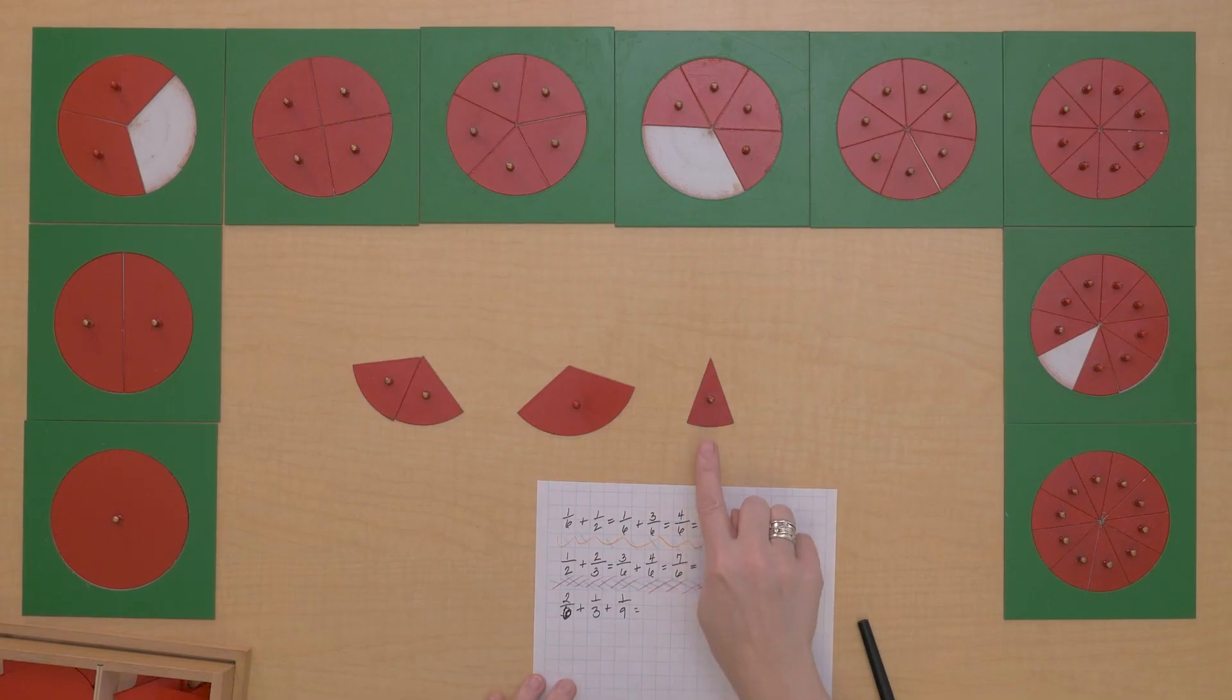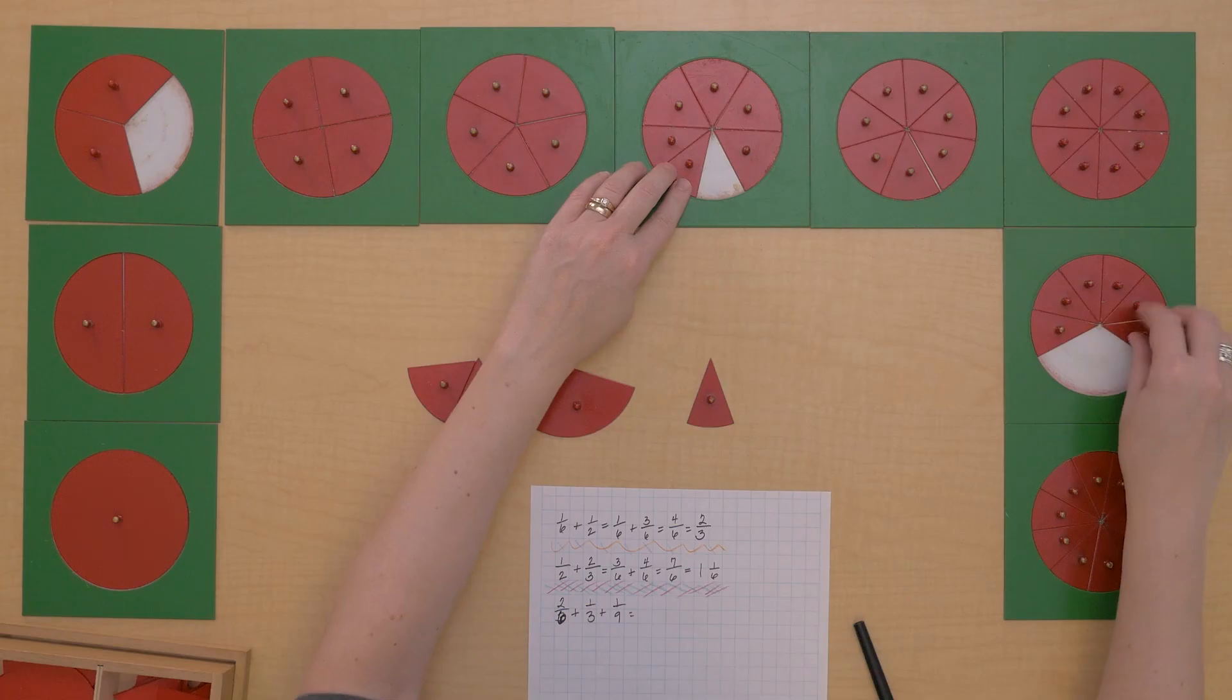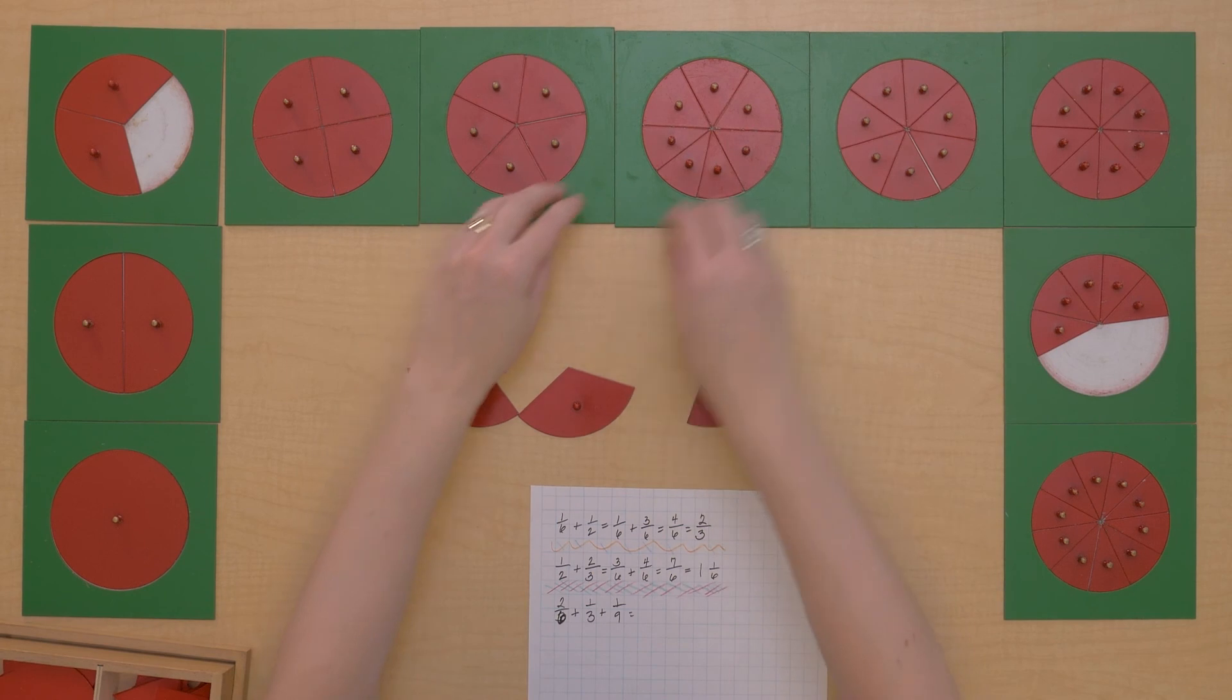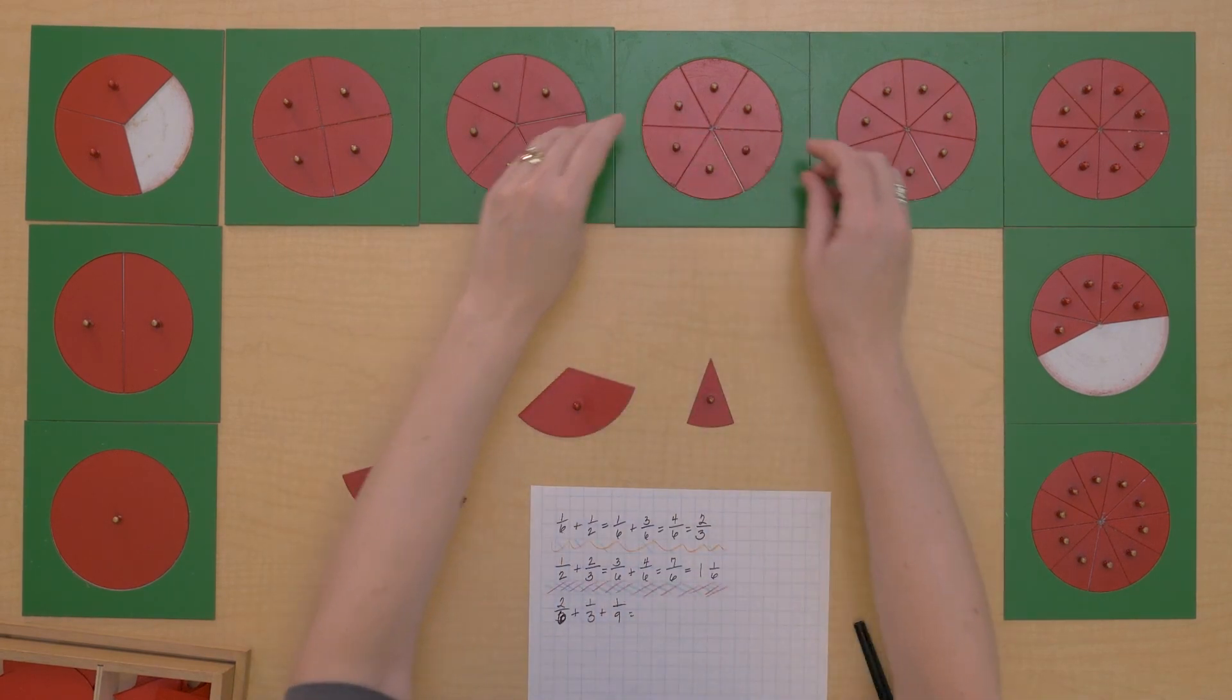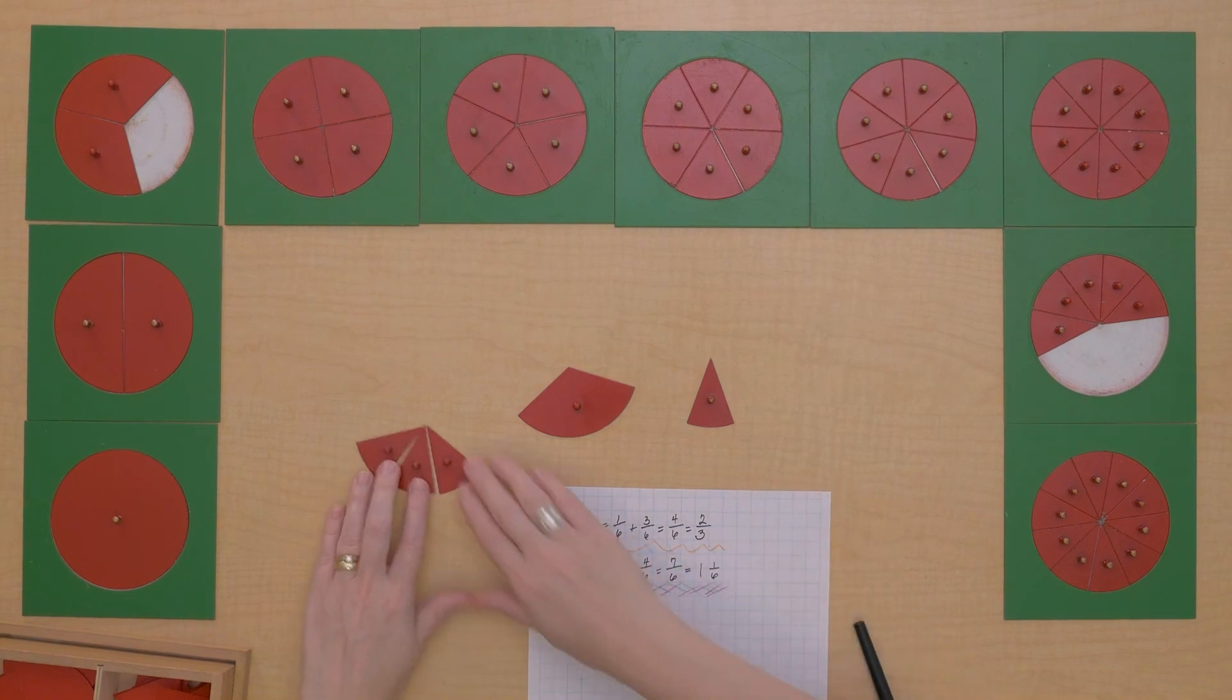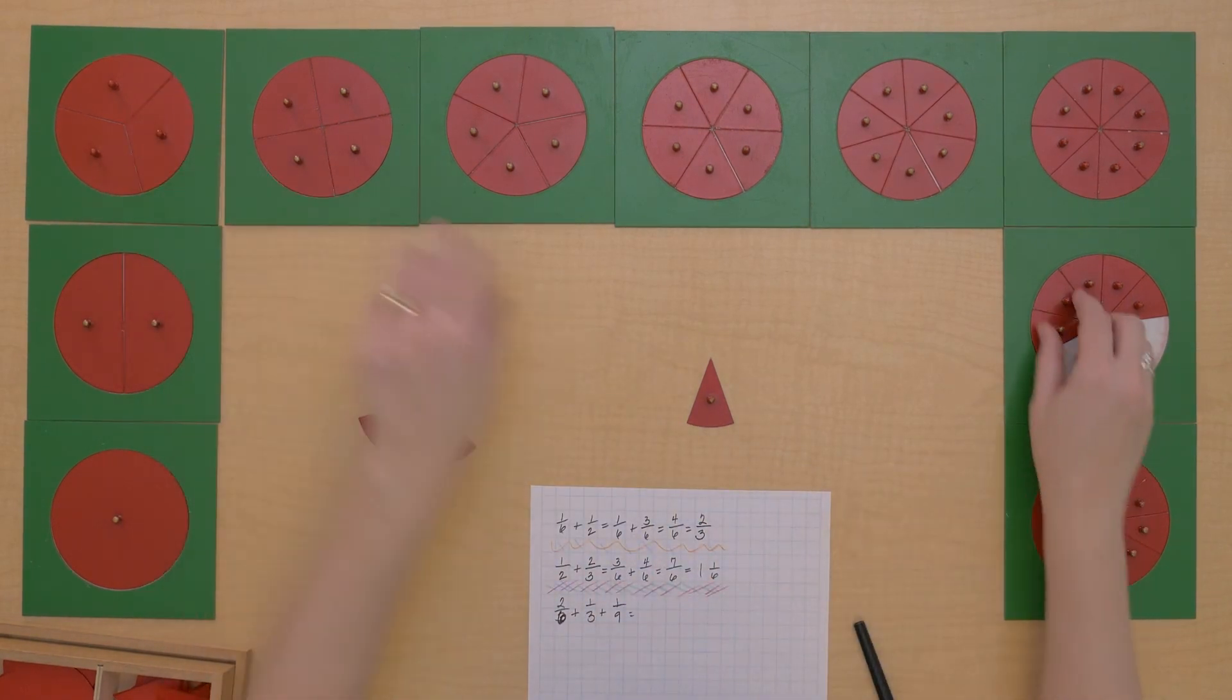What can we do here? I think we have to convert them all to ninths, don't we? Okay, so two-sixths equals how many ninths? Yeah, three-ninths. So we can exchange for three-ninths. And one-third equals three-ninths.